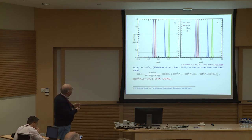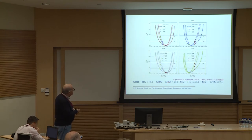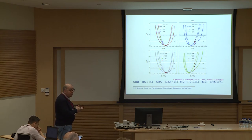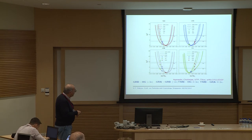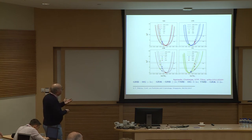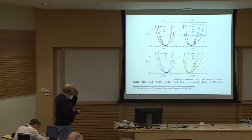Analysis using prospective data from DUNE and T2HK shows one can distinguish golden ratio B from hexagonal mixing at more than 3σ, golden ratio A from golden ratio B at about 2σ, tri-bimaximal from hexagonal at about 3σ, and tri-bimaximal from golden ratio at about 2σ. Future experiments will be able to exclude or disfavor some of these cases.